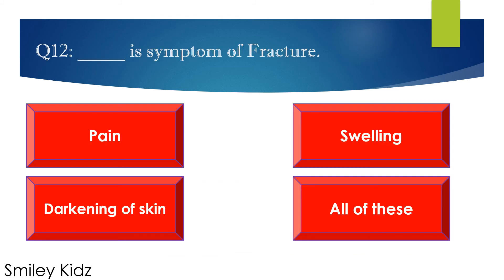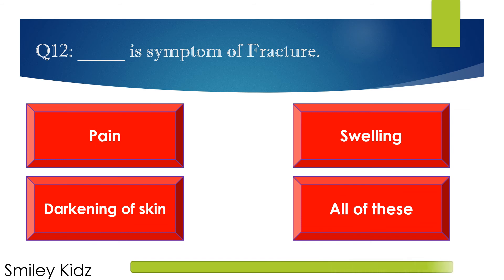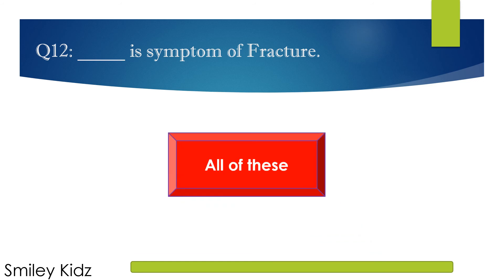Question number 12. Dash are symptoms of fracture. Options are A. Pain, B. Swelling, C. Darkening of skin, and D. All of these. Your time starts now. Your time is up. The right answer is all of these. Pain, swelling, and darkening of skin are the symptoms of fracture.